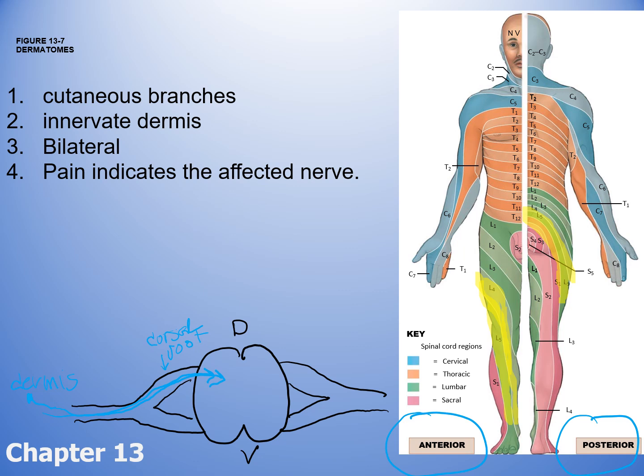If you have tingling or numbness just in your thumbs, that means you have compressed the C6 level. A dermatome — the area of skin that is innervated — can tell you which area of the spinal column is affected.